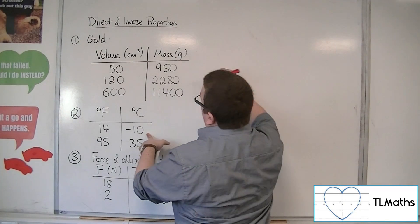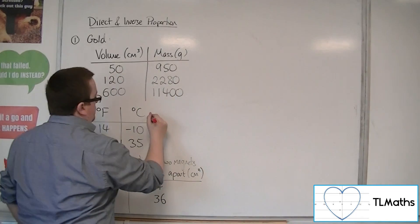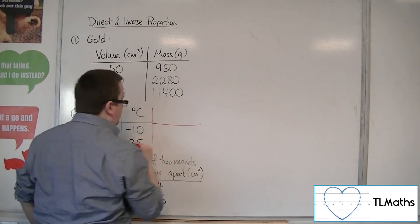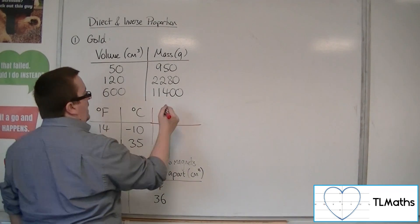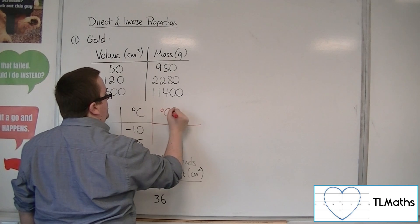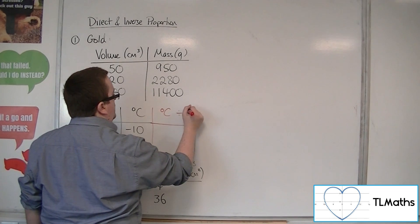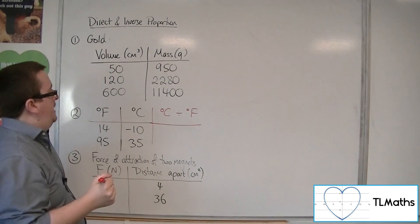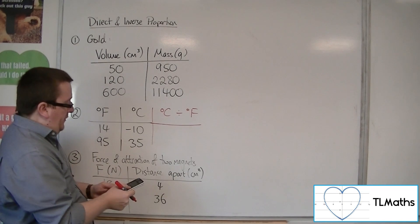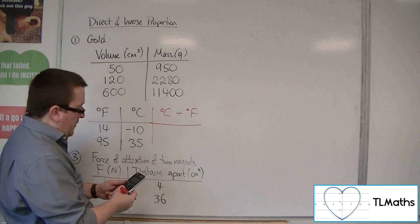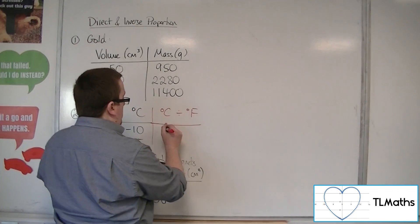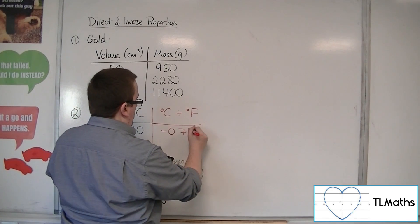So let's do a separate column. And let's have degrees centigrade divided by degrees Fahrenheit. So we've got minus 10 divided by 14, which is minus 5 sevenths, or minus 0.714 repeating.